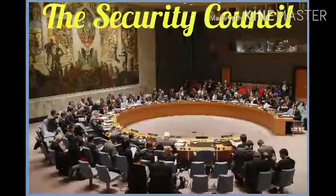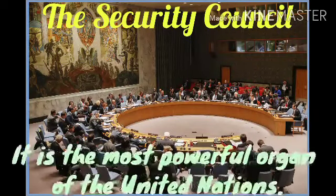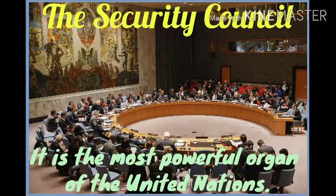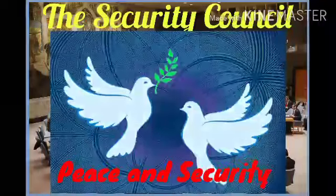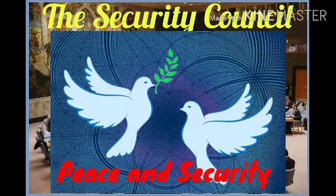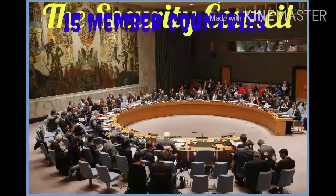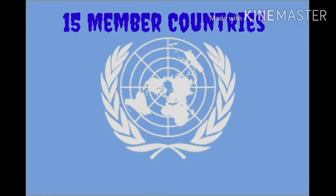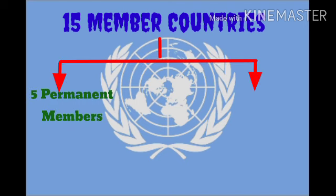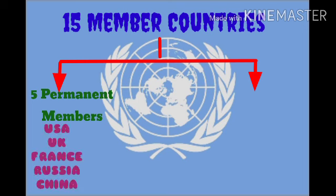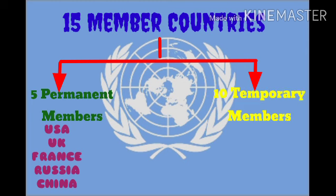Now, the Security Council. The Security Council is the most powerful organ of the United Nations. It is responsible for maintaining international peace and security. The Security Council has 15 members, out of which 5 members are permanent. The 5 permanent members are USA, UK, France, Russia, and China. The remaining 10 are temporary members who are elected for a term of 2 years.